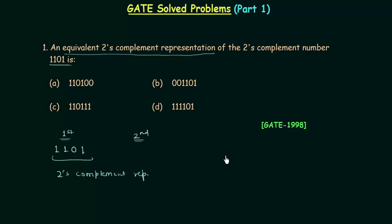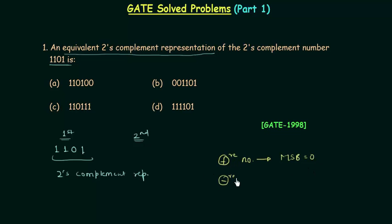In 2's complement representation, the MSB of a positive number is equal to 0. The most significant bit is equal to 0 for a positive number, and for a negative number the most significant bit is equal to 1.